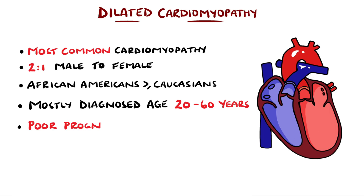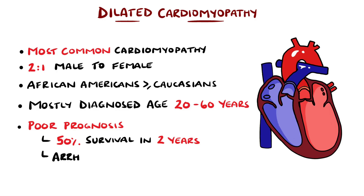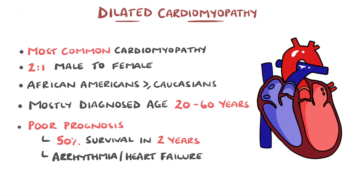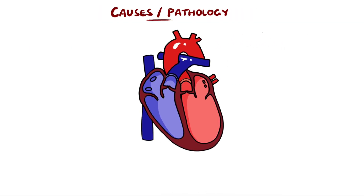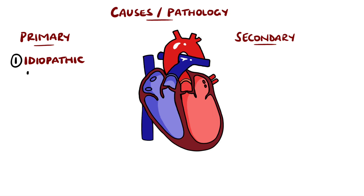It features a poor prognosis of 50% survival in two years, with most of the mortality coming from heart failure or ventricular arrhythmias. Dilated cardiomyopathy is divided into primary and secondary, and in most instances there is no obvious cause, which is termed idiopathic.